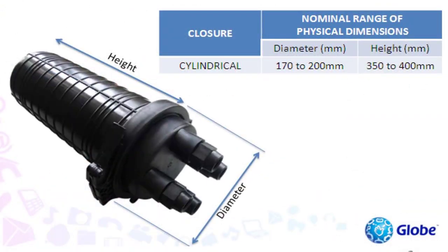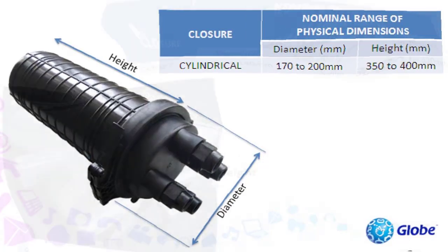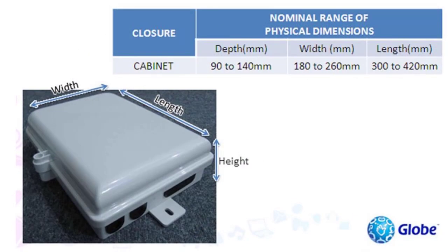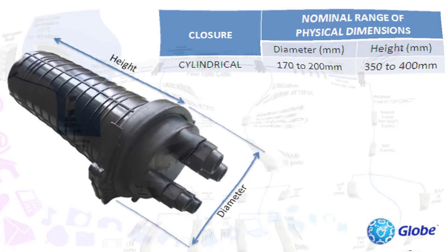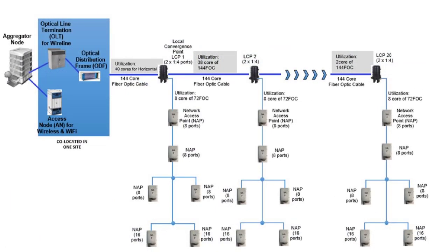Globe Telecom uses dome splice closures to house the LCP. It contains two pieces of 1-4 splitters. NAP carries a 1-8 splitter and uses a cabinet type enclosure. The cabinet type enclosure is only suitable for aerial application. For underground scenarios, dome type closure is used for NAP. By combining a 1-4 split LCP and 1-8 NAP, we come up with 32 lines per OLT port.